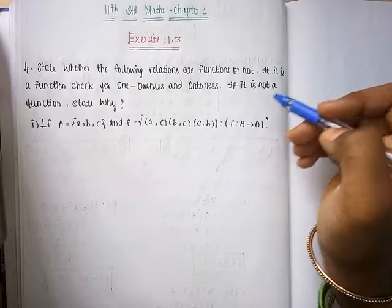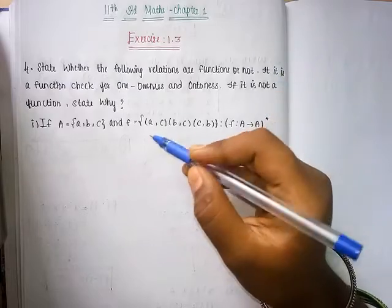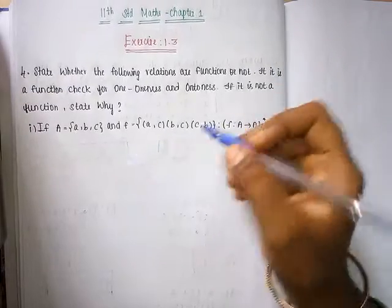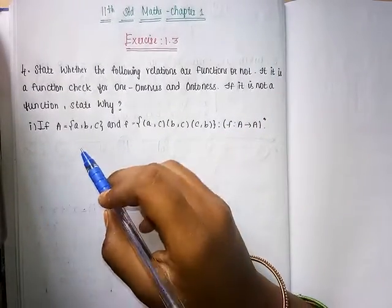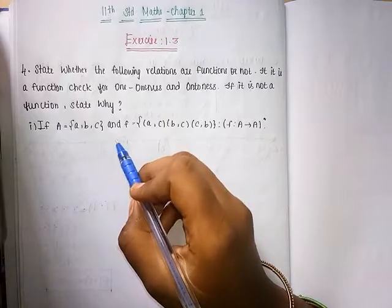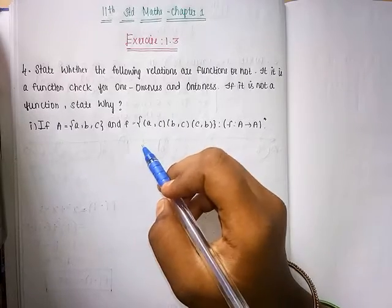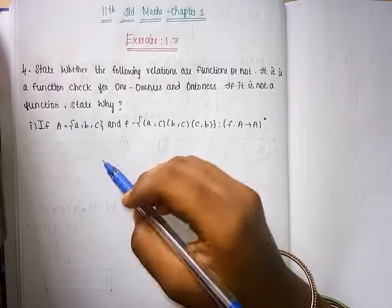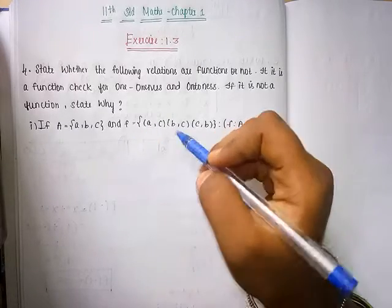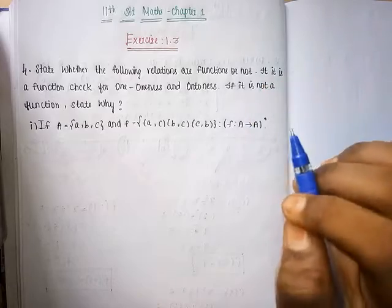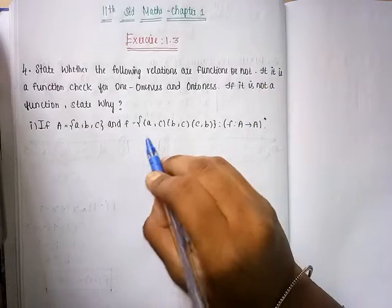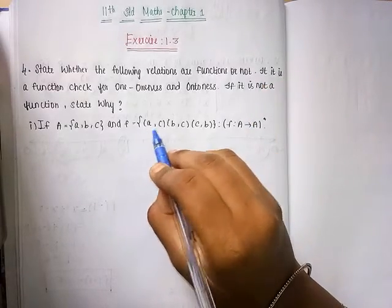If it is not a function, state why. The relation given is on set A = {a, b, c}, with mappings involving elements a, b, and c. In your mind, you just visualize the mapping.